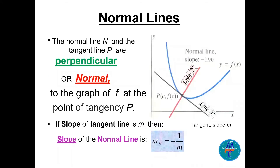Now we look at normal lines. We have a curve, and the normal line is perpendicular to the tangent line. If the tangent is line l and the normal line is m, we know that if two lines are perpendicular, the product of their slopes is −1. So the slope of the normal line is −1/m, where m is the slope of the tangent line.